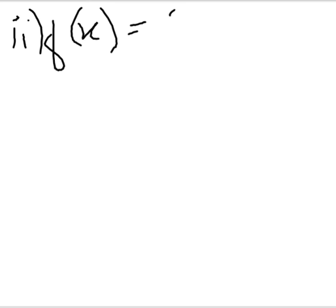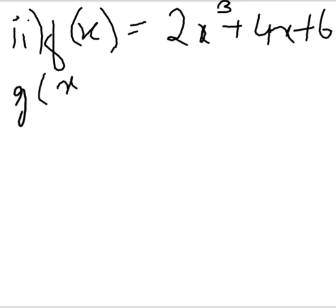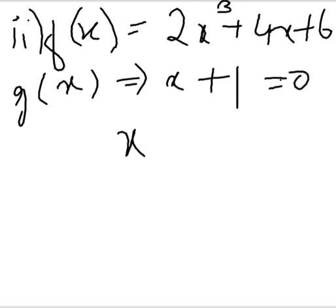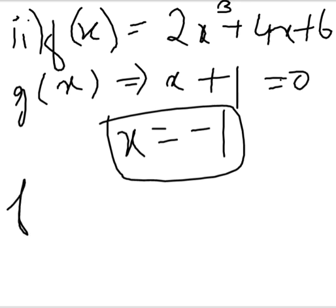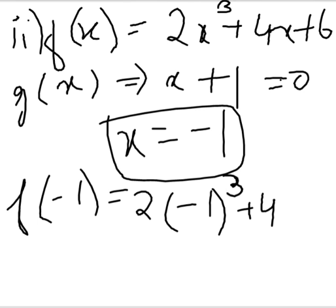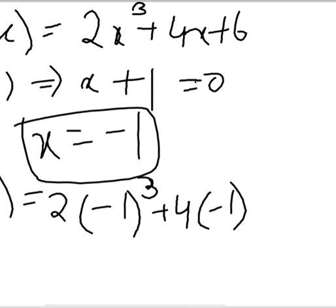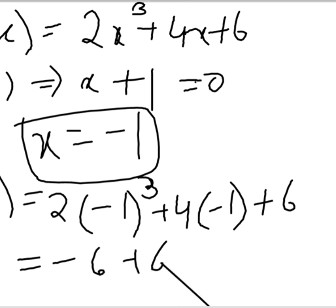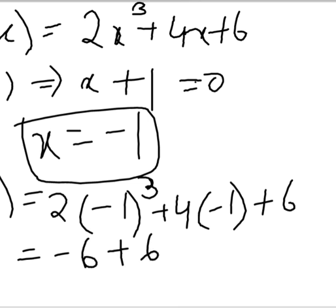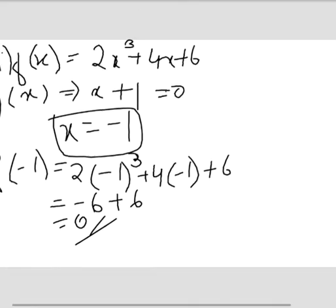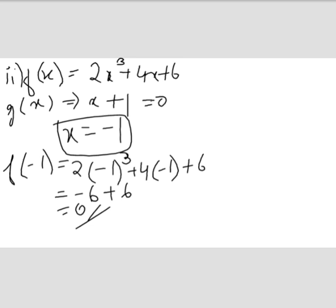Now the second part: f(x) = 2x³ + 4x + 6 and g(x) = x + 1. Equate g(x) to 0: x + 1 = 0 gives x = -1. Substitute: f(-1) = 2(-1)³ + 4(-1) + 6. When you solve this, you get -6 + 6 = 0. Since the result is 0, x + 1 is a factor of f(x).